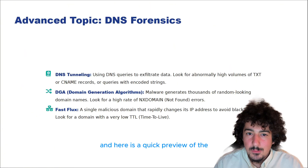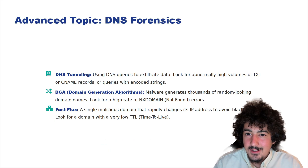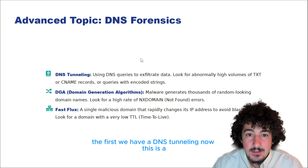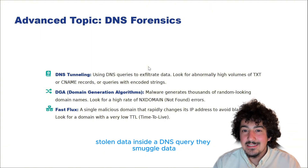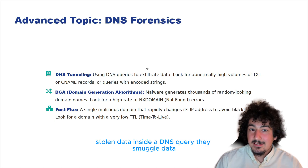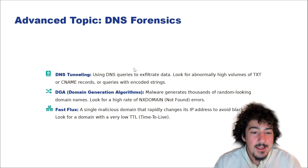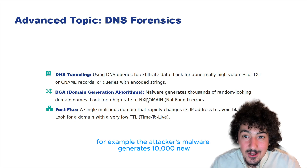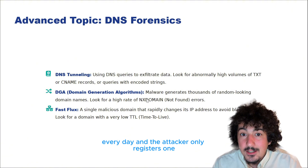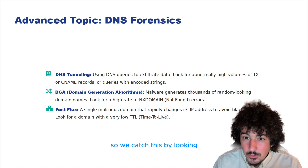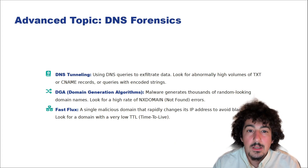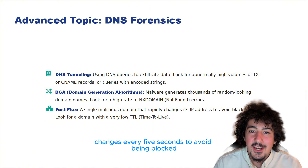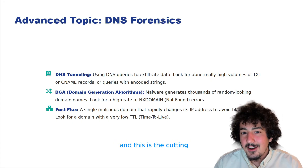Here is a preview of the really advanced stuff we will cover. Attackers love to abuse DNS because it's almost always allowed out. First, DNS tunneling: attackers encode stolen data inside a DNS query and smuggle it right through your own DNS server. We also have DGA — Domain Generation Algorithms — where the attacker's malware generates 10,000 new random domains every day and the attacker only registers one. We catch this by looking for a storm of 'not found' errors from one machine. And we have fast flux — the C2 shell game — where the IP for evil.com changes every 5 seconds to avoid being blocked. This is the cutting edge of network forensics.